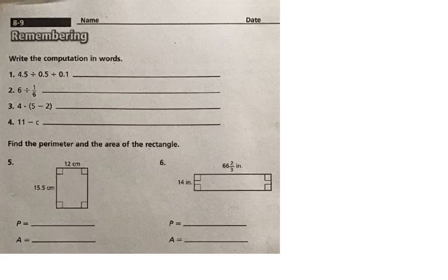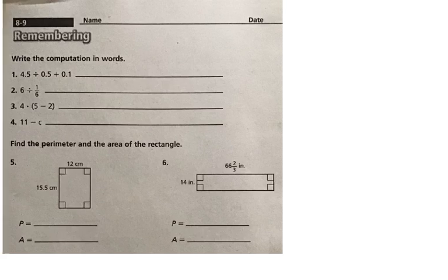But writing the computation in words is going to be our first part. And number one, I'll give you an example. And it says 4.5 divided by 0.5 plus 0.1, or 4 and 5 tenths divided by 5 tenths plus 1 tenth. And you have to think about order of operations to be able to write this correctly.